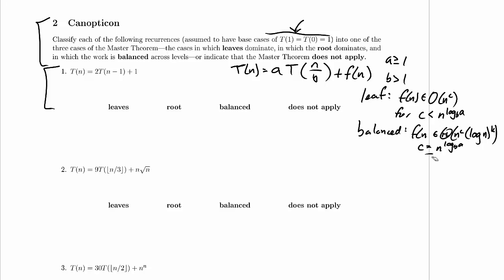Oops, sorry about that, just trying to erase this line and got more than I bargained for. Okay, and in the root case we have f of n is lower bounded by n to the C for C greater than n to the log base B of A.